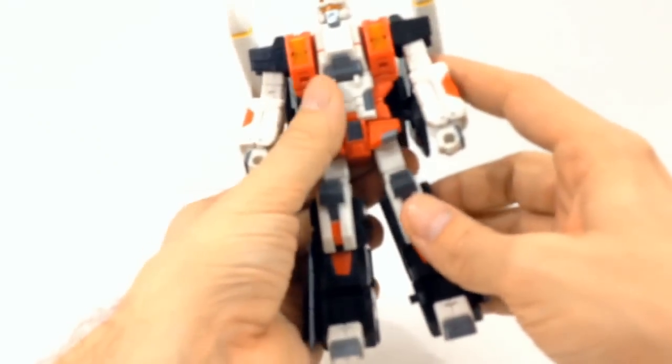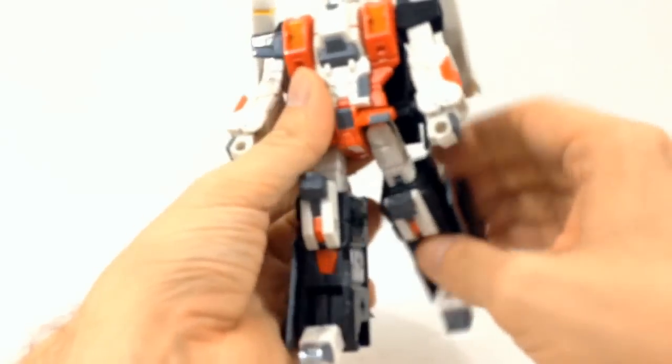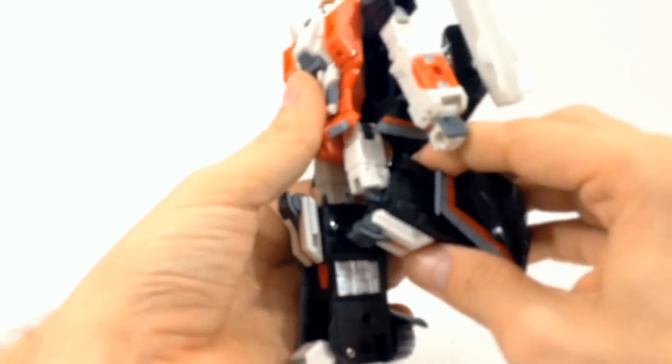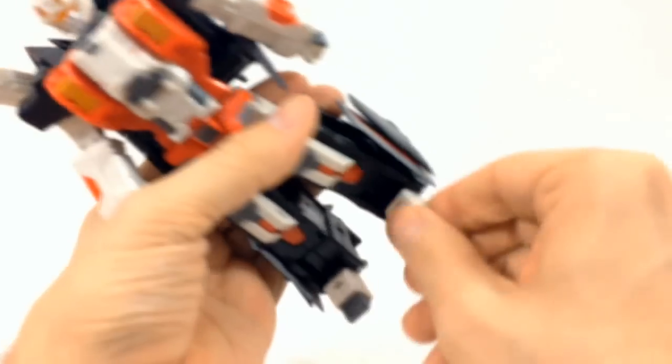But at his hips you can move his legs forward and back and out to the side. He does have a knee joint and a ball joint for his foot.